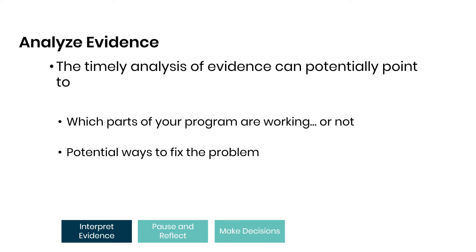Within a responsive feedback approach, we have to emphasize the timely analysis of evidence. We are trying to get evidence strategies that will allow us to look at the data and make sense out of it while we are still in the field. What we're hoping the evidence gathered can point to includes which parts of your program are working or not working, and sometimes potential ways to fix the problem. We really want to make sure it's giving us valuable information that can inform what's wrong or how to fix it.